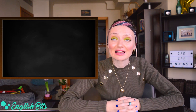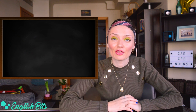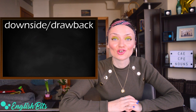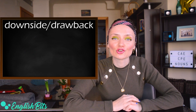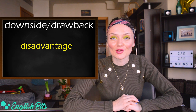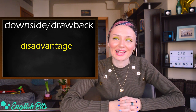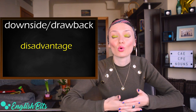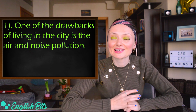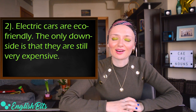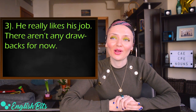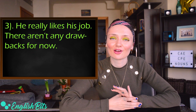The first noun we're going to learn today is actually double, as we have two nouns that mean exactly the same and have the same level: downside and drawback. They mean disadvantage, so in the exam instead of using 'disadvantage' you can say 'drawback' or 'downside', which are more advanced. Examples: 'One of the drawbacks of living in the city is the air and noise pollution.' 'Electric cars are eco-friendly; the only downside is that they are still very expensive.' 'He really likes his job — there aren't any drawbacks.'